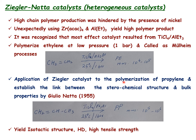Ziegler then tried various co-catalysts: when he introduced nickel, polymer production was hindered. Later, he unexpectedly introduced zirconium acetylacetonate along with triethyl aluminum, and found a high yield of polymer product. By varying combinations, he recognized that titanium chloride and trialkyl aluminum in the presence of a small amount of magnesium chloride enabled polymerization of ethylene to polyethylene with a molecular weight of 10⁴ to 10⁵ even at room temperature and one bar pressure — the Ziegler catalyst, used in the Mulheim process for polyethylene production.